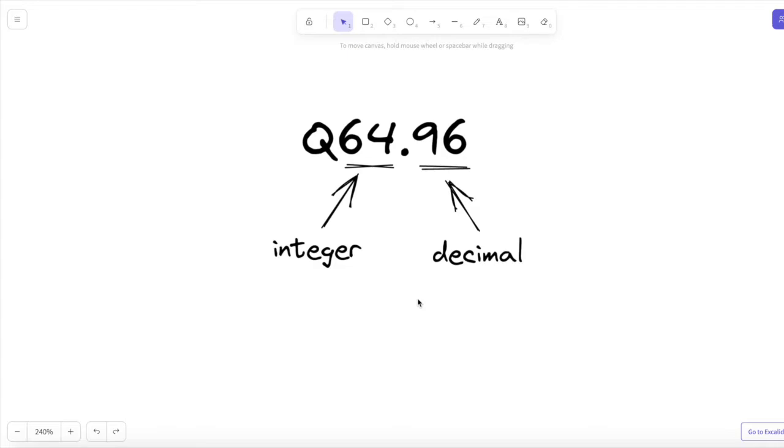That means 64 bits of the 160 bits are allocated to the left side of the decimal place in the binary number. So that's the integer portion. And 96 bits of information are allocated to storing the decimal portion to the right side of the decimal place.